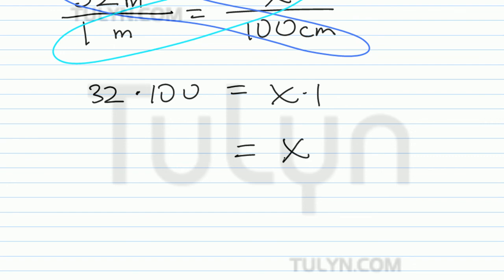So 1 times x is x. 32 times 100 is 3,200, so the answer is 3,200 centimeters. Thank you very much.